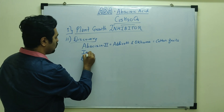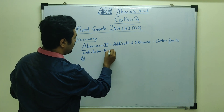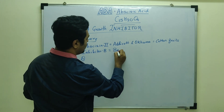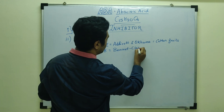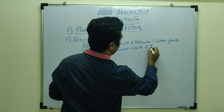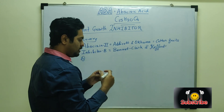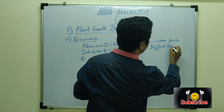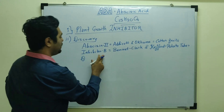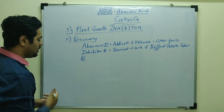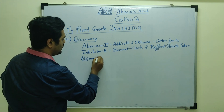The second hormone discovered was known as Inhibitor B. Inhibitor B was discovered by Bennett Clark and Kephod from the potato tuber plant — this substance named Inhibitor B was isolated from potato tuber.